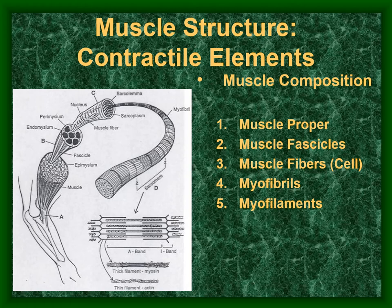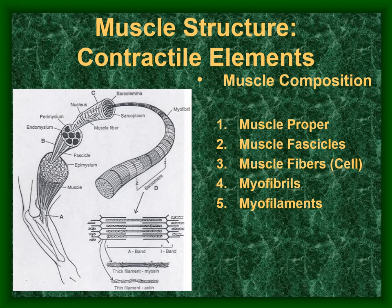This drawing shows those subdivisions. The largest unit is the muscle proper; within it are subdivisions called fascicles. The muscle fibers are very long cells — in the case of fusiform or strap-shaped muscles, they travel the whole length of the muscle.